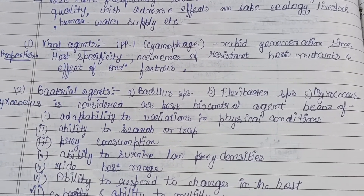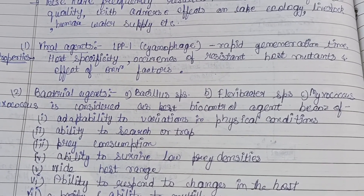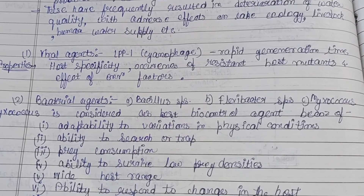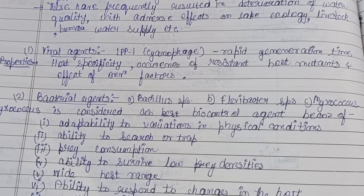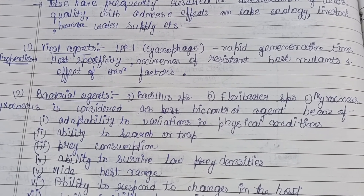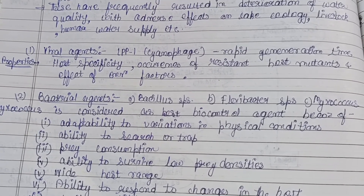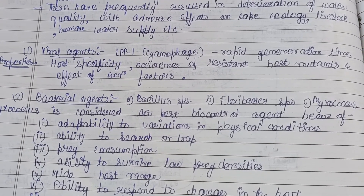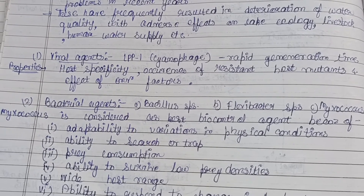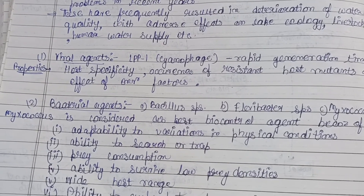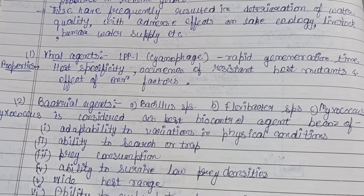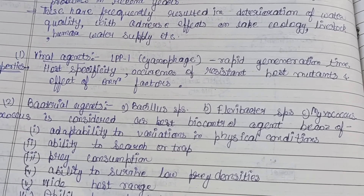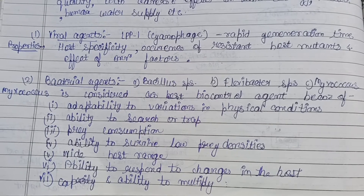Various agents are used for this purpose. The first is a viral agent: LPP1 cyanophage is used for controlling cyanobacterial blooms. Its properties include rapid generation time (fast multiplication rate), host specificity (acting on a particular host species), and resistance through occurrence of resistant host mutants, along with adaptation to environmental factors.